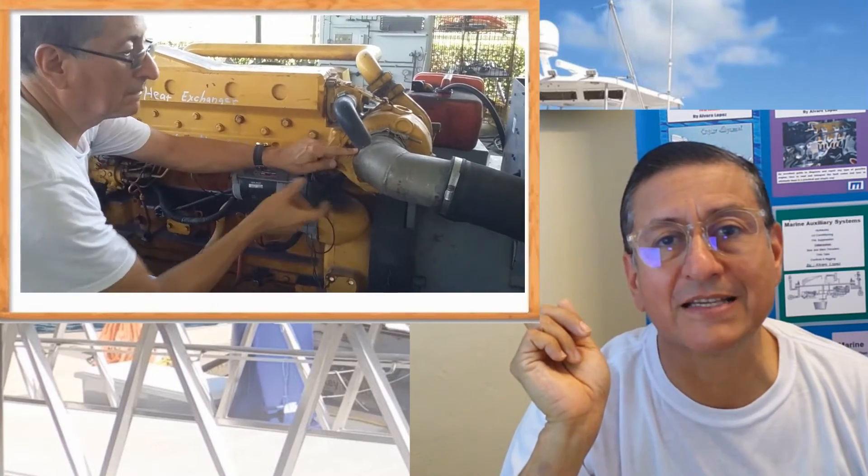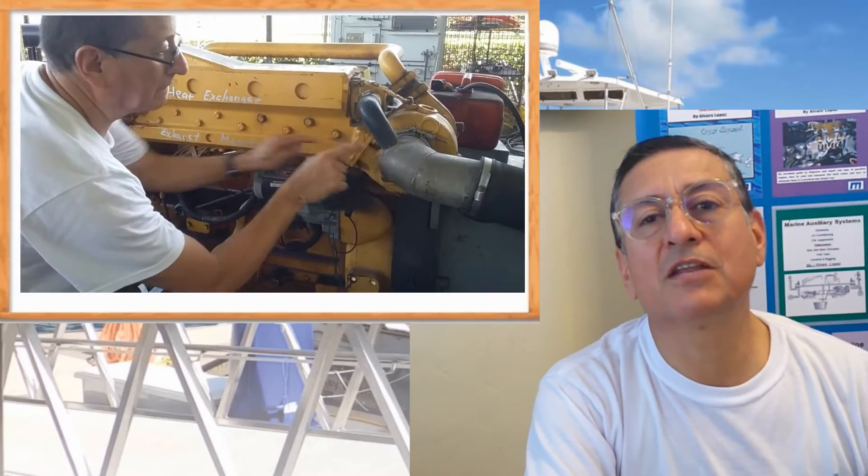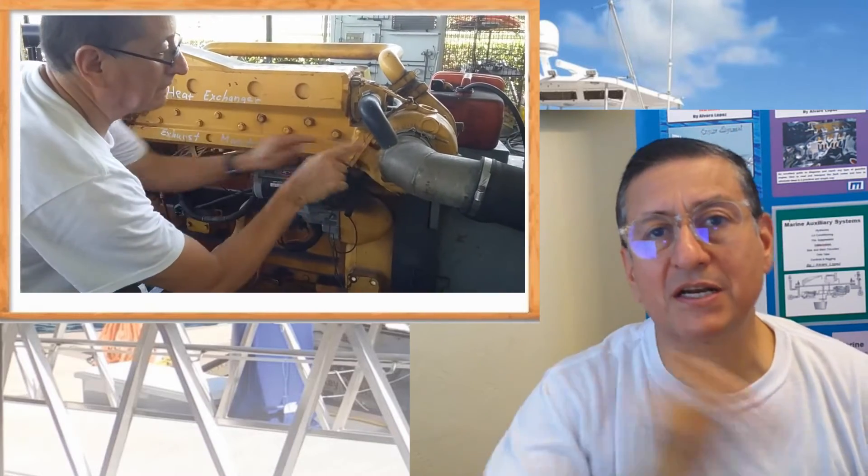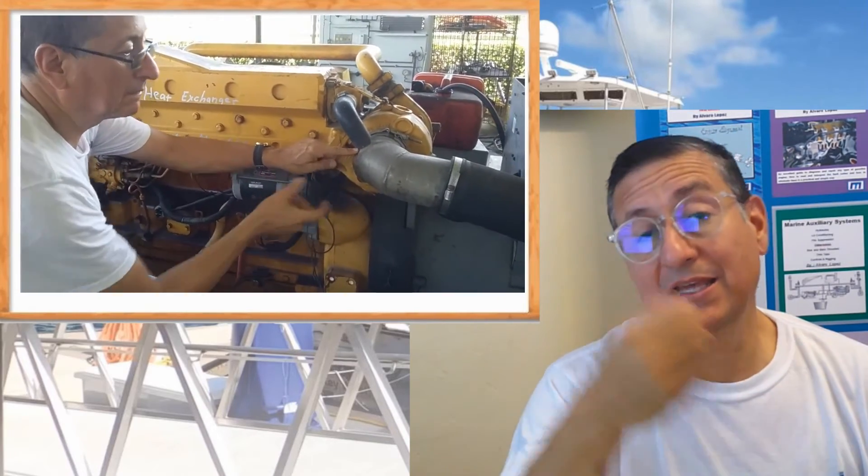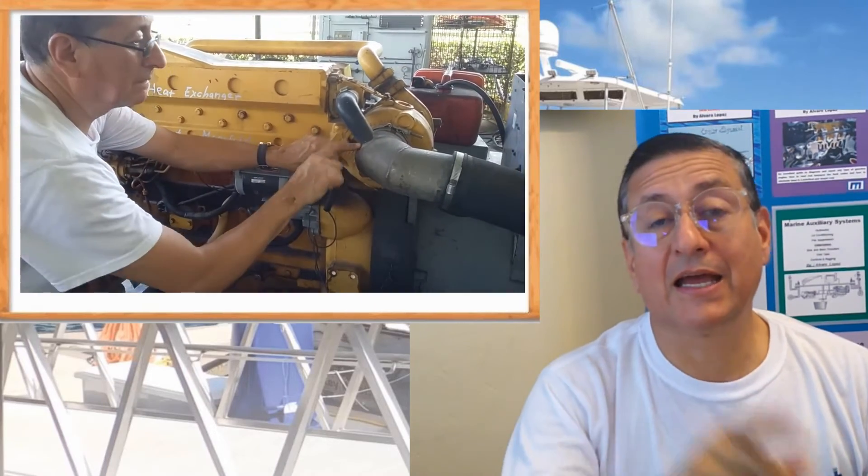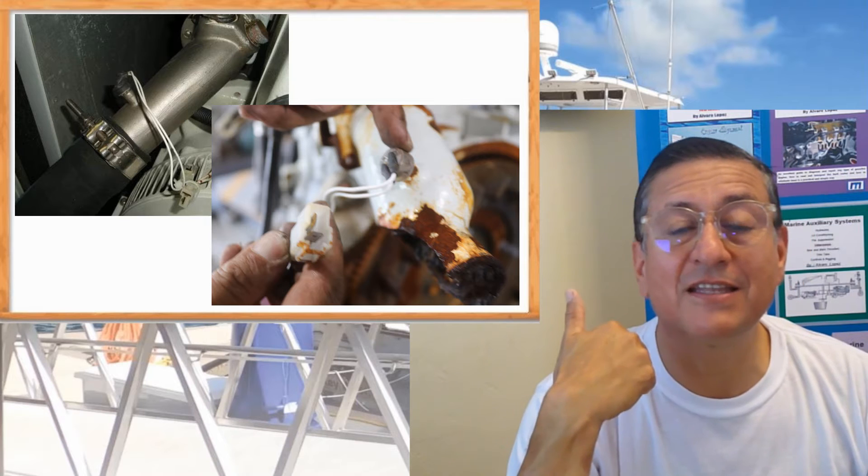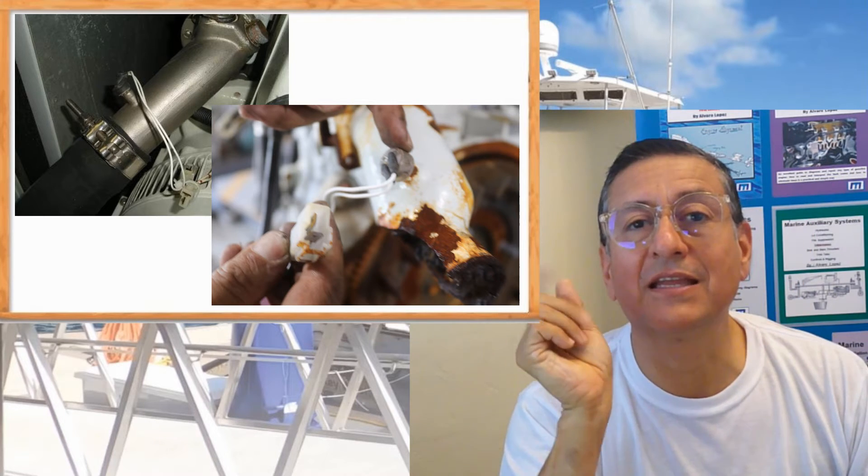At that point, exactly there, the gases and the raw water converge together. In the output, you have gases with raw water. The exhaust gas temperature sensor normally is located in that elbow.